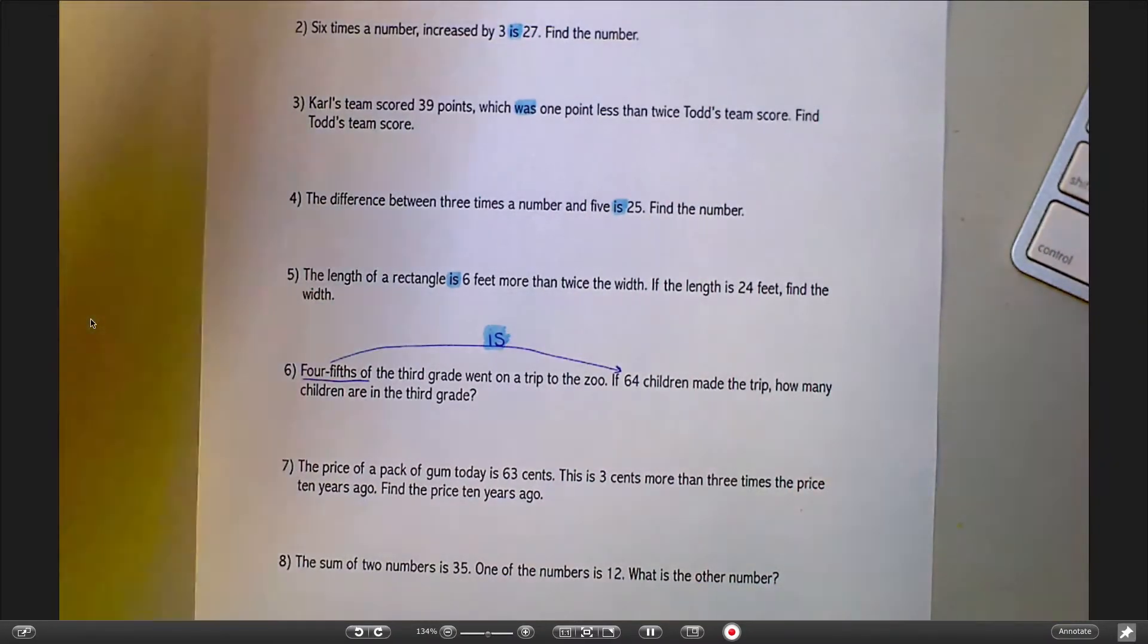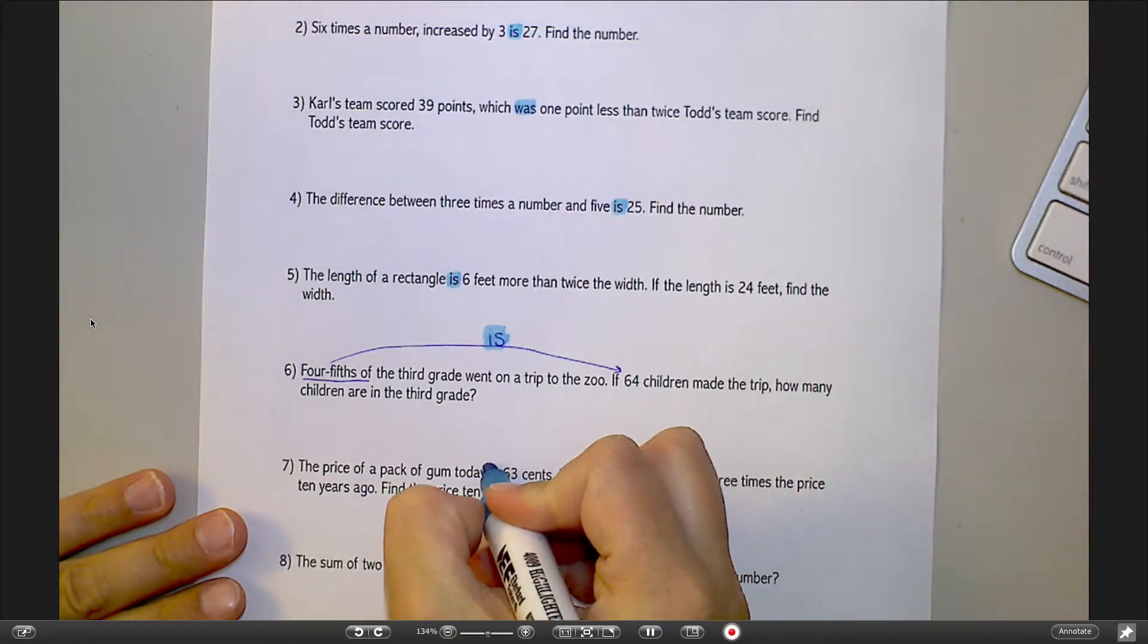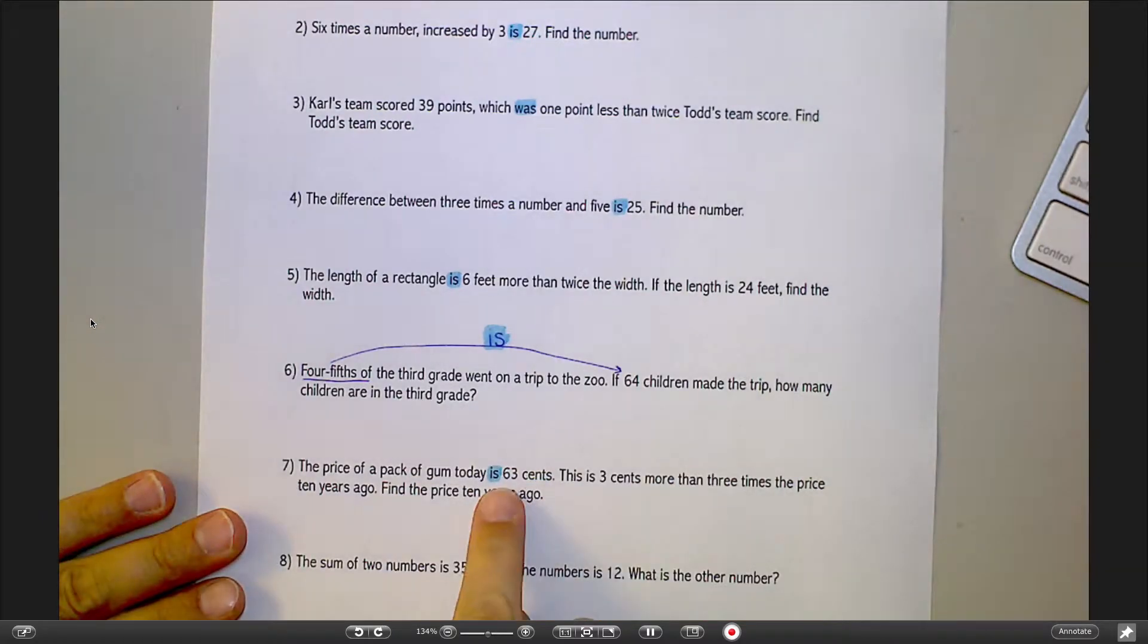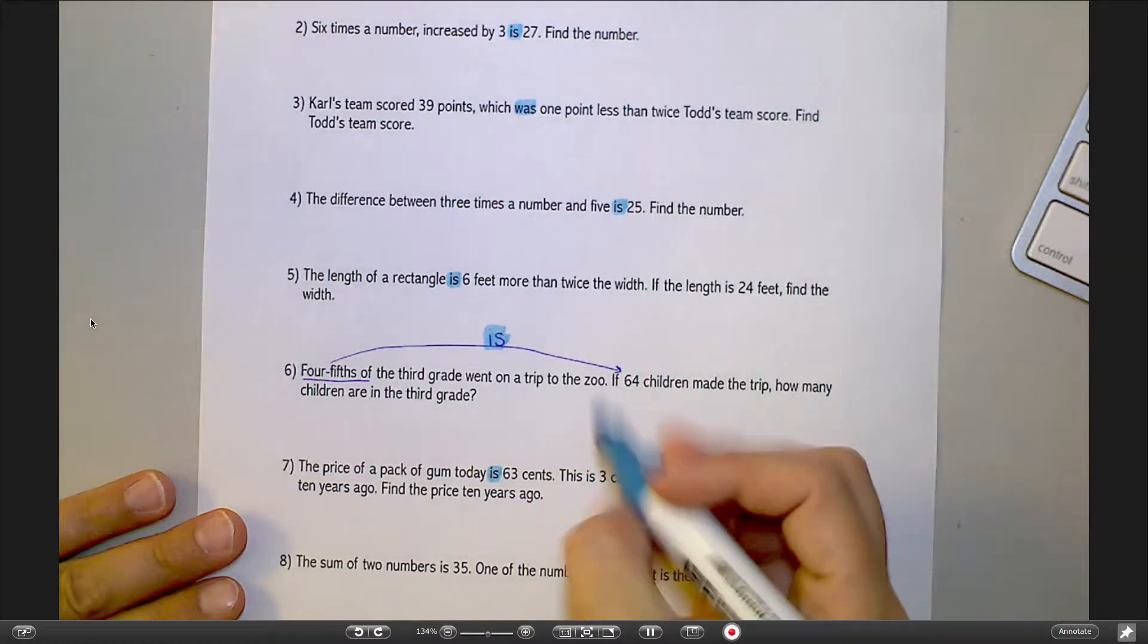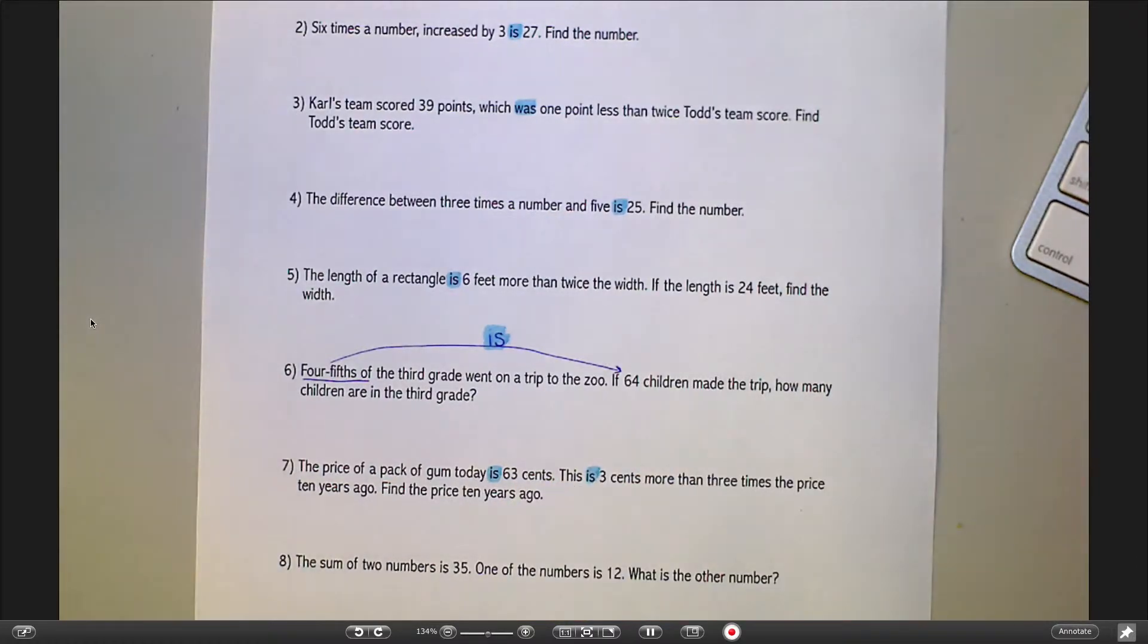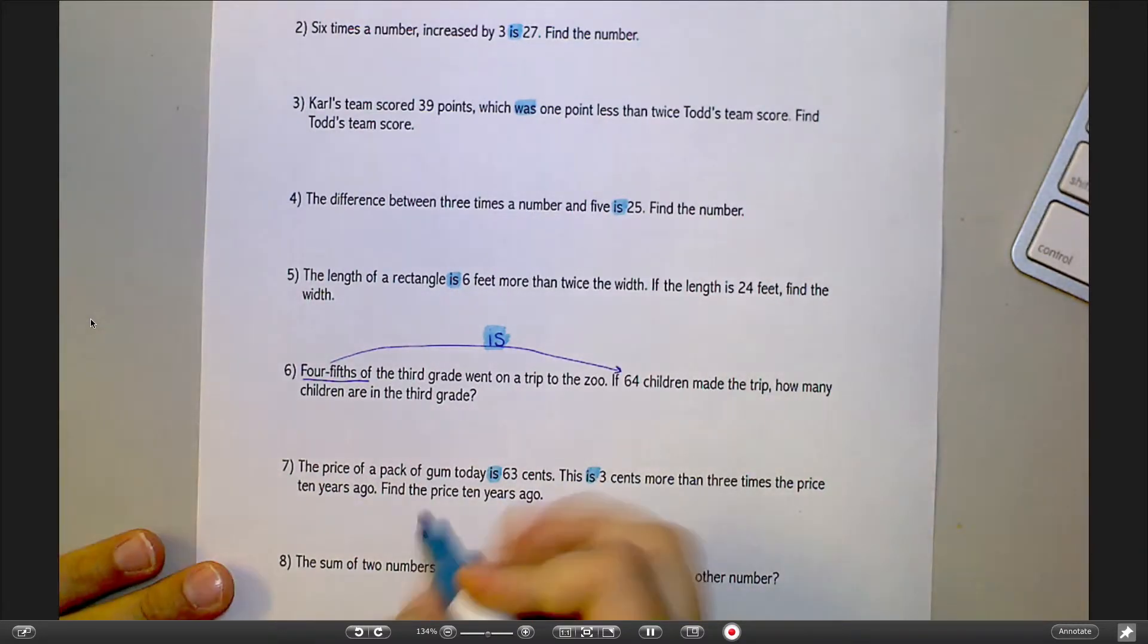Price of the pack of gum today is 63 cents, and then what you need to be careful of here is there's another one, and we'll talk about that when we actually write this equation. This is 3 cents more than 3 times the price 10 years ago. We'll talk about that double is when we write the equation together. And then the last one, number 8, the sum of two numbers is 35.